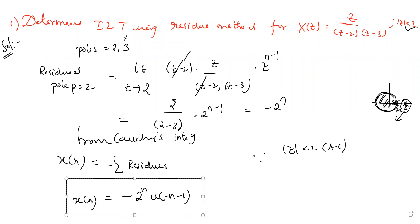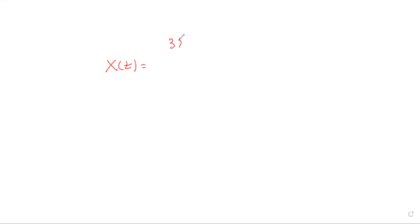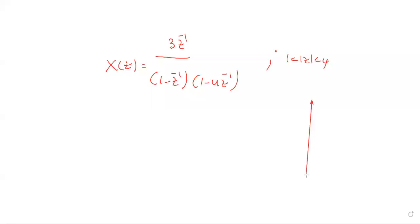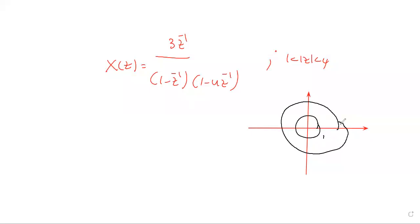Please try to solve this practice problem: find the inverse Z-transform of 1 minus 4 Z inverse, where the ROC is given as 1 less than mod Z less than 4. Here you can clearly observe that we need to draw two circles — one circle with radius 1 and one with radius 4 — and the ROC is an annular ring between these two circles. For the two poles, we calculate two residues. One residue is at pole value 1, and the second residue is at pole value 4.